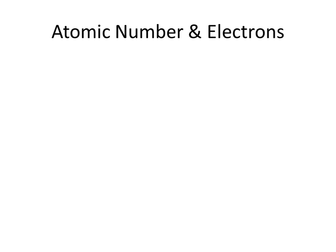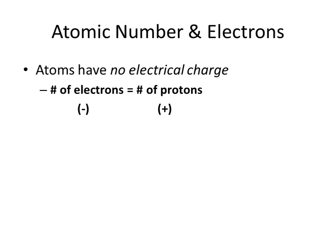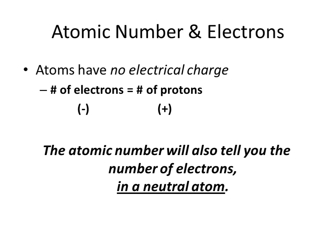Now, the atomic number can also, in some circumstances, tell us how many electrons are present, not just the number of protons. If atoms are electrically neutral, there's no charge to them, and because we know that protons are positively charged, if they're electrically neutral, that must mean that the number of electrons is equal to the number of protons. And so, when you have a neutral atom, the atomic number will also tell you the number of electrons.